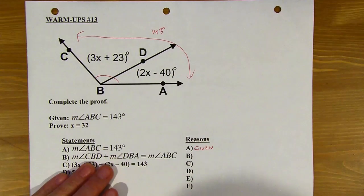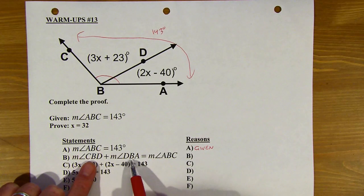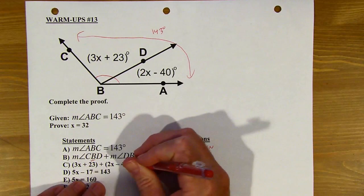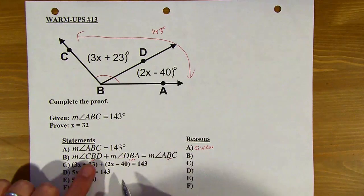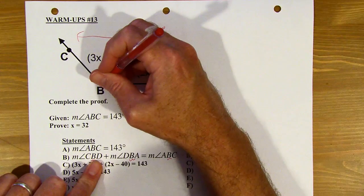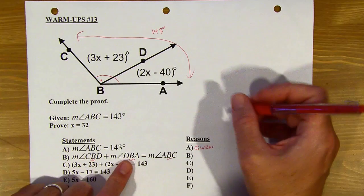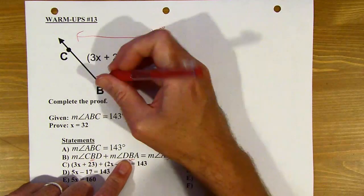Okay. Now, next up, it says measure of angle CBD plus angle DBA. Remember that the vertex is in the middle of these when we name them. So CBD, CBD, that's this angle right here where I just put the dot. Okay, that's angle CBD. And DBA, DBA, that's this one.